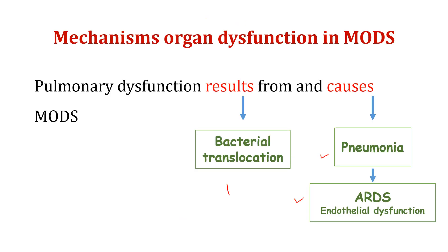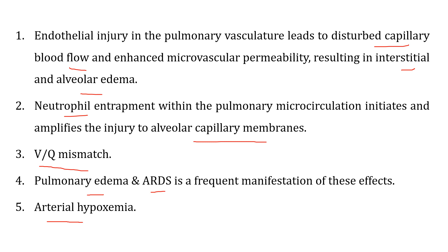Regarding the respiratory system, bacterial translocation can result in MODS — this is a type of secondary MODS. Pneumonia and adult respiratory distress syndrome can cause primary MODS towards pulmonary dysfunction. Pulmonary dysfunction can be directly predisposed to primary MODS, or it can be a complication or consequence of another cause and predispose to secondary MODS.